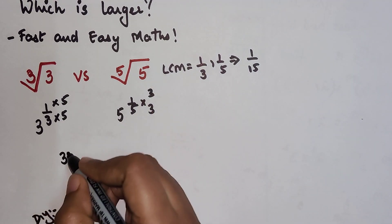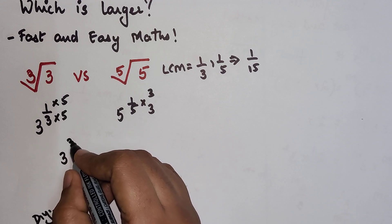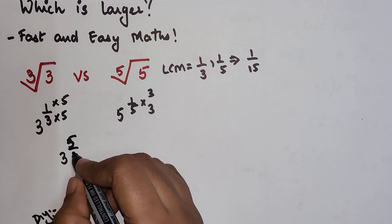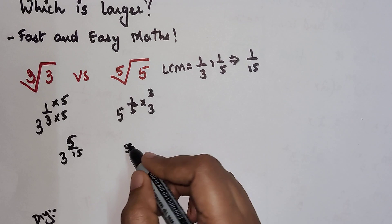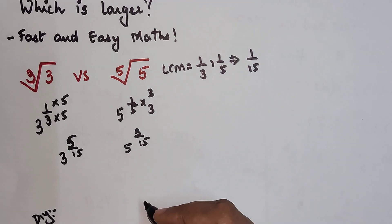So basically now I am getting 3 raised to 5 upon 15, and this is 5 raised to 3 upon 15.